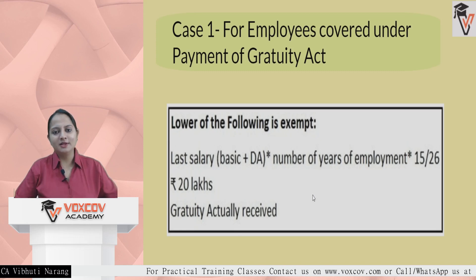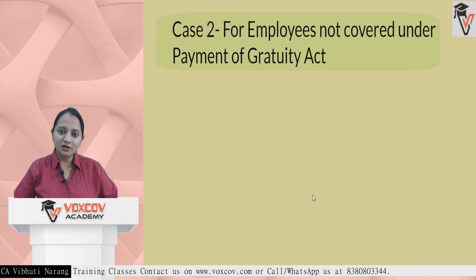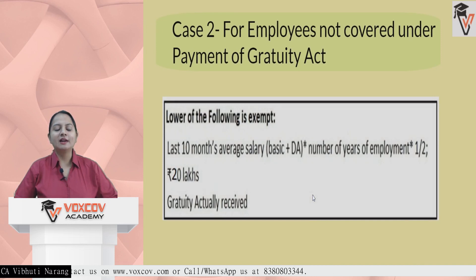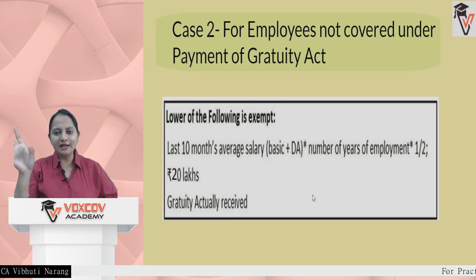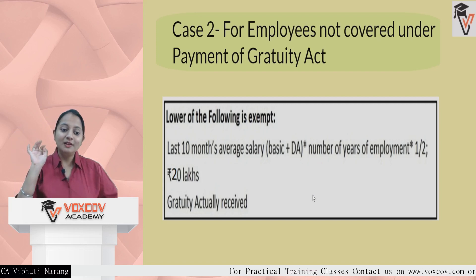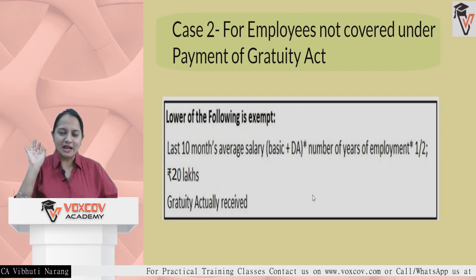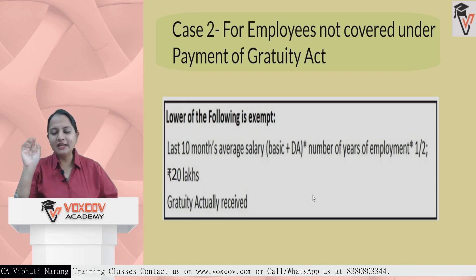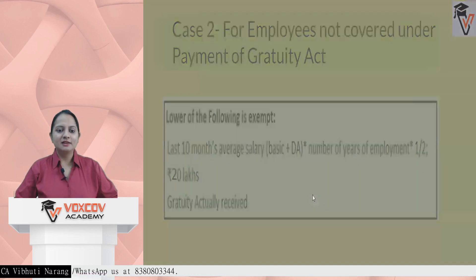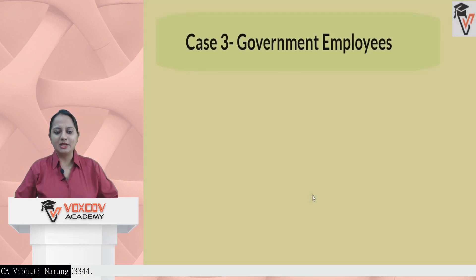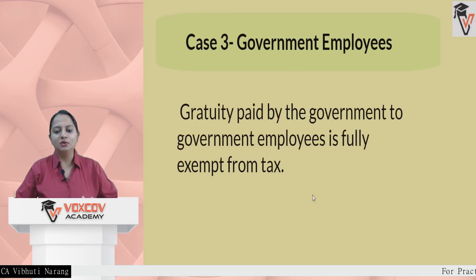For employees not covered under the Payment of Gratuity Act, the lower of three limits applies: gratuity actually received, Rs. 20 lakh, or half a month's salary for each year of employment based on the last 10 months' average salary — which includes basic plus DA plus fixed commission. For government employees, gratuity paid is fully exempt.